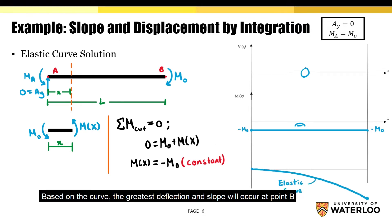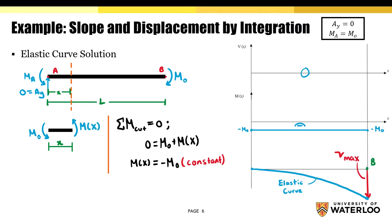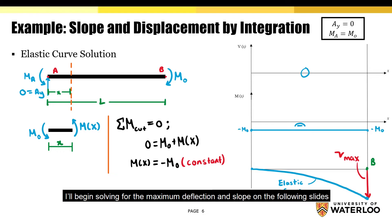Based on the curve, the greatest deflection and slope will occur at point B. Now that we have the elastic curve, I'll begin solving for the maximum deflection and slope on the following slide.